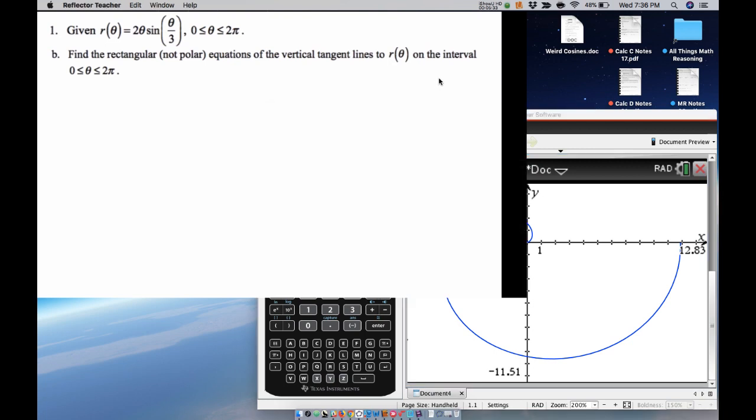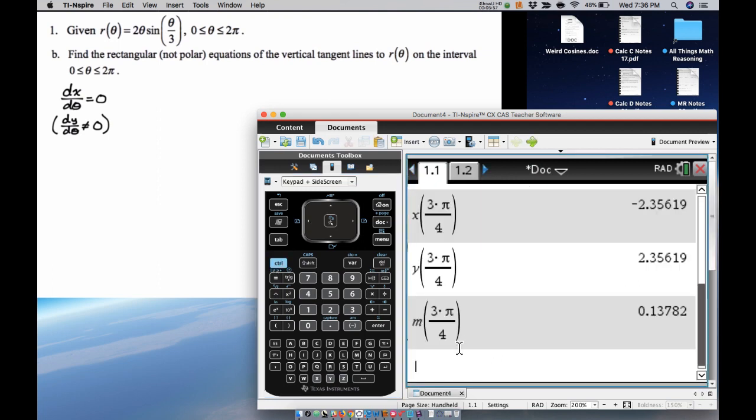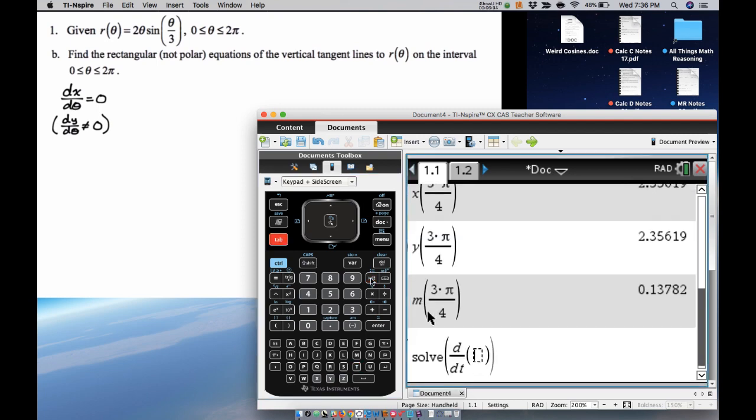So we need to find, vertical means the denominator of dy/dx is zero. So we need dx/dθ to be zero, and strictly speaking, we also need dy/dθ to not be zero at those points, but that's not going to happen in this case. So if we go back to the calculator, it's going to be, I want to solve the derivative with respect to t of x(t) equals zero, and I want to solve for t. There's trig functions involved, so it's probably periodic, and you don't want to worry about that. So what I'm going to do is such that 0 < t < 2π.